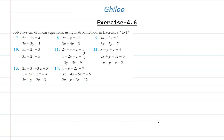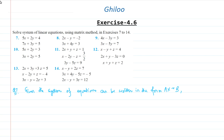Starting with question number 7. The given system of equations can be written in the form Ax = B, where in this case A is equal to [5, 2; 7, 3], capital X is equal to [x; y], and B is equal to [4; 5].